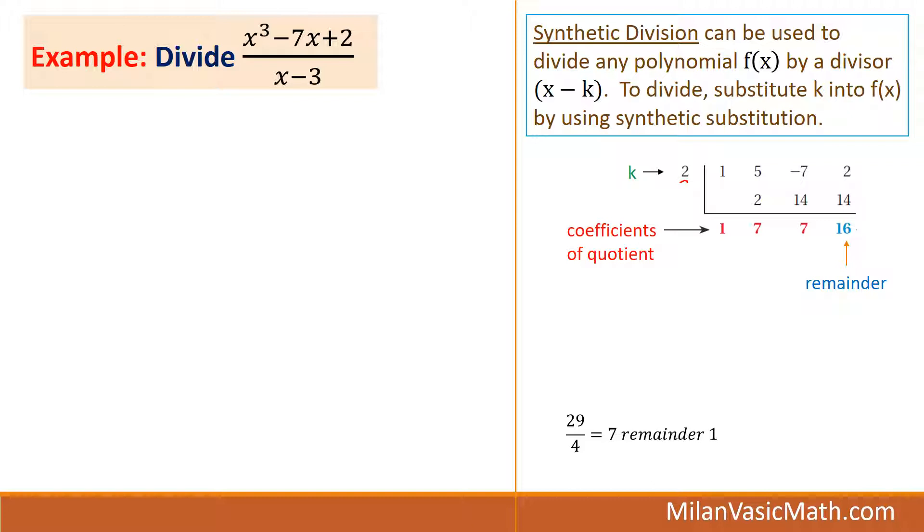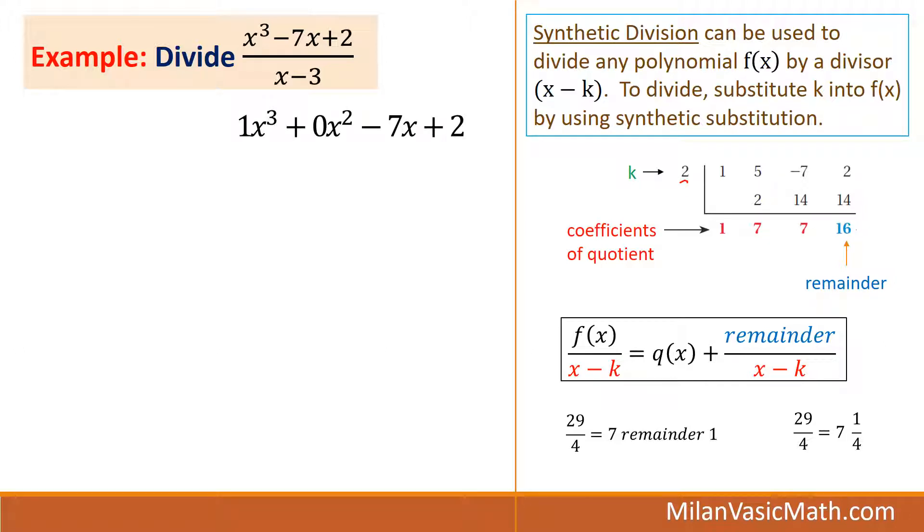One other thing I want you to recall. When you used to divide 29 by 4, for example, 4 goes into 29 7 times. 7 times 4 is 28, and we have a remainder of 1. Later, as you were learning this, you start writing it as 7 and 1 fourth. Here's a general rule of what we're about to do. So when we divide, we get a quotient, and then we put the remainder as the numerator and the divisor as the denominator.